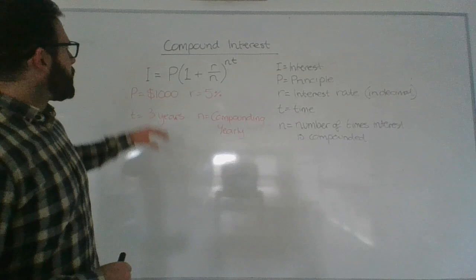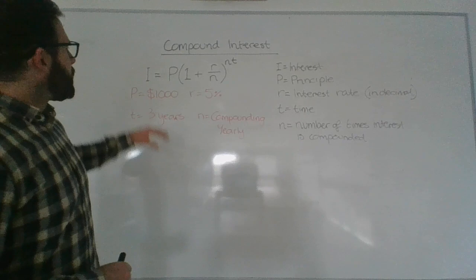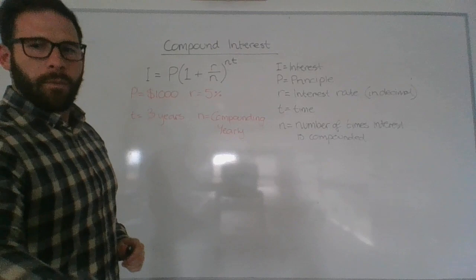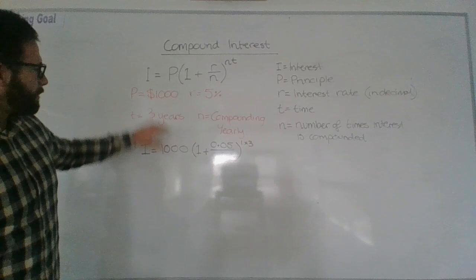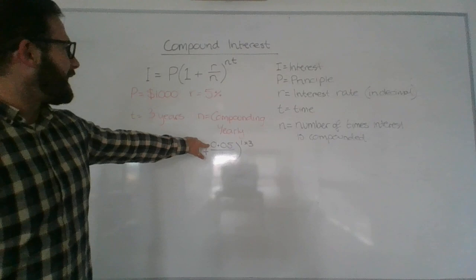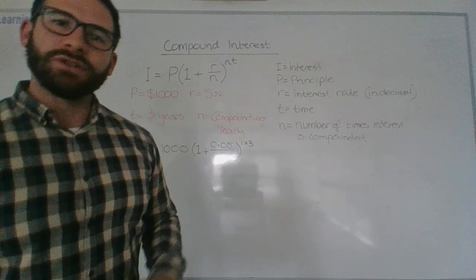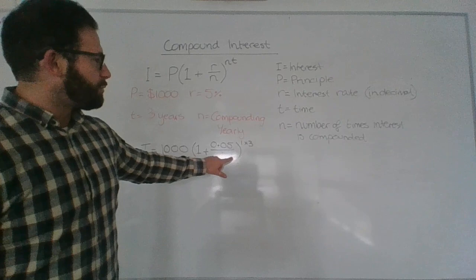Basically what I'm going to do, I'm going to substitute these values into my formula. So I've written it in: my principal being a thousand dollars, I open up my bracket one plus, now my interest rate, my r value is 0.05 because remember we like to work in decimals not in percentages.